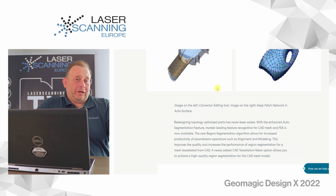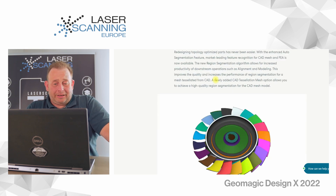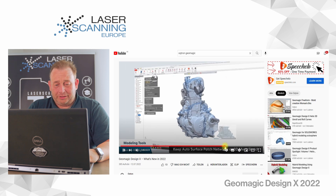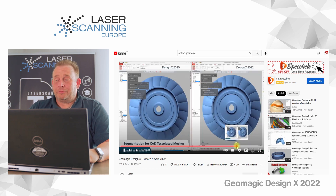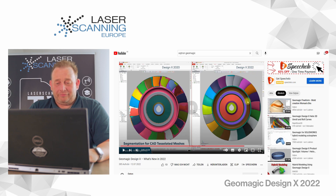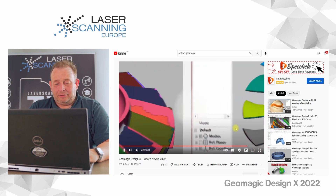The next feature we find interesting is the new auto segmentation. On the left is the old version from 2020 and on the right is the 2022 version. You can see a much better segmentation — surfaces that are distinct are more uniquely identified. They've improved the segmentation tool so that you get a better result overall.